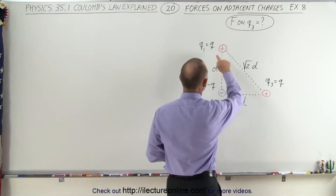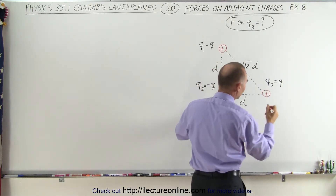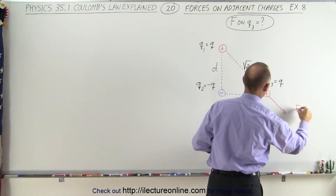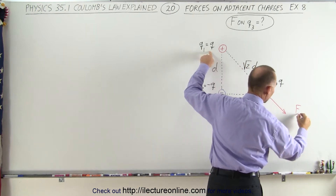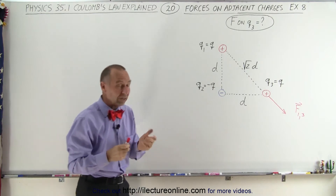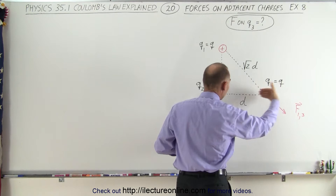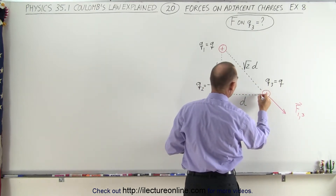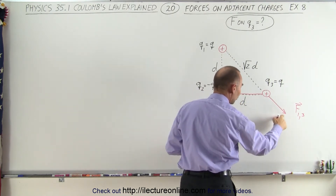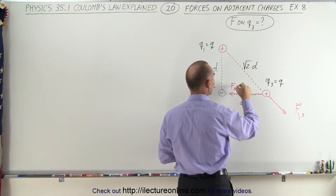The force between Q1 and Q3 — since they're both positive — will be a force of repulsion, which means the force will be pointing in this direction. That will be equal to F between 1 and 3, written F1,3. Now the force between the second charge and Q3 is a force of attraction, so Q3 will be pulled towards Q2 and the force will be in this direction. Also notice that the force will be larger than F1,3 because the two charges are closer together. So this will be the force F2,3.